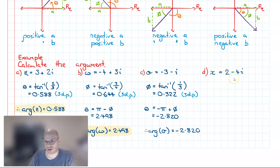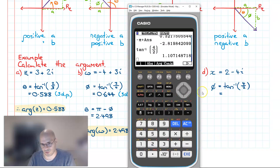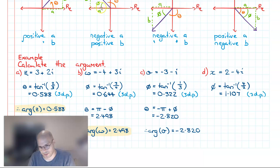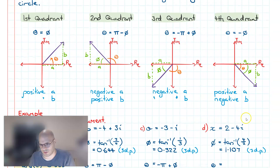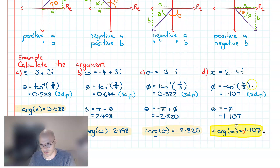The final example: x equals 2 minus 4i. Starting with the interior angle phi, inverse tangent of 4 over 2 gives 1.107. We have a positive real component and negative imaginary, so we're in the fourth quadrant, meaning theta equals negative phi. Therefore the argument for x is negative 1.107.